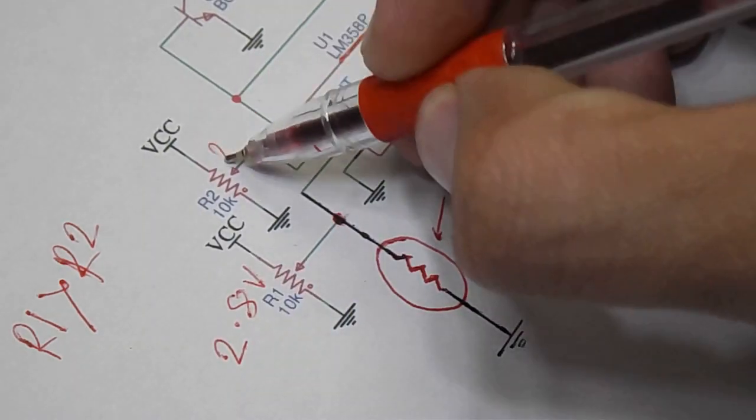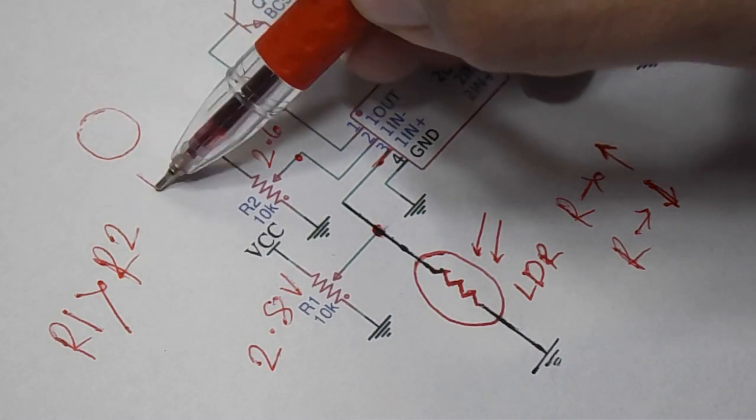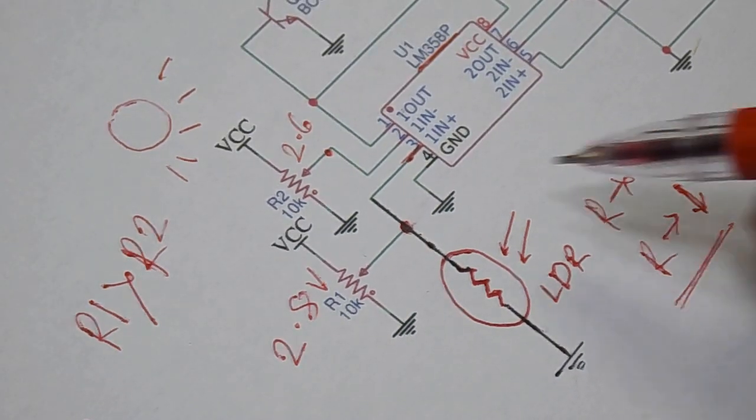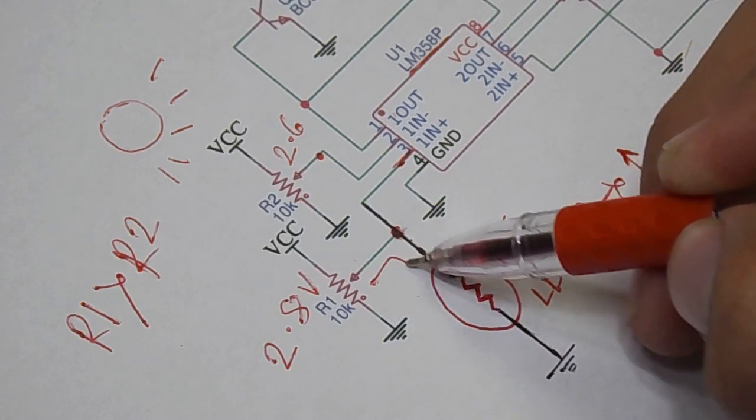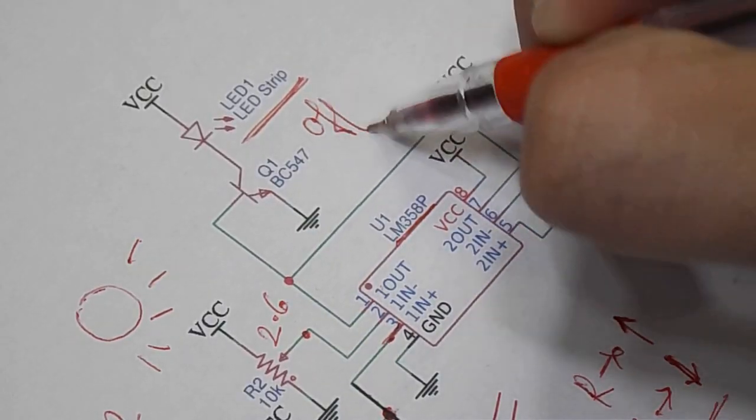When there is brightness, the resistance of the LDR will be small and all the current will flow through the LDR straight to the ground, and the resultant output is off.